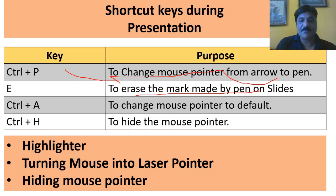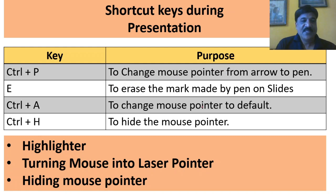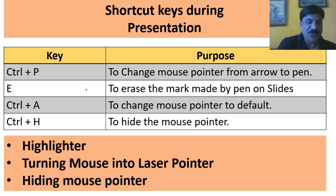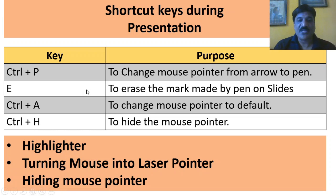Press E to erase the mark made by the pen. I am now pressing E. Then, to change the mouse pointer back to the default, simply press Ctrl+A and observe that my mouse pointer has been changed.